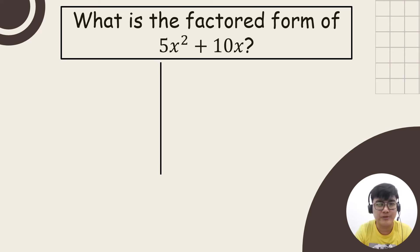Example number 1. What is the factored form of 5x squared plus 10x? First, we are going to find the GCF or Greatest Common Factor of 5x squared and 10x. To get the Greatest Common Factor, we are going to use the prime factorization.